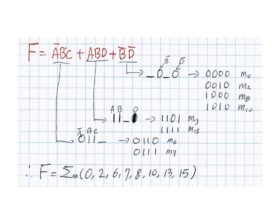The first term in this expression is a'bc, where variable d is missing — that represents a don't care condition. So this term represents 0,1,1,don't care, which contributes two minterms: 0110 and 0111, so minterms 6 and 7.